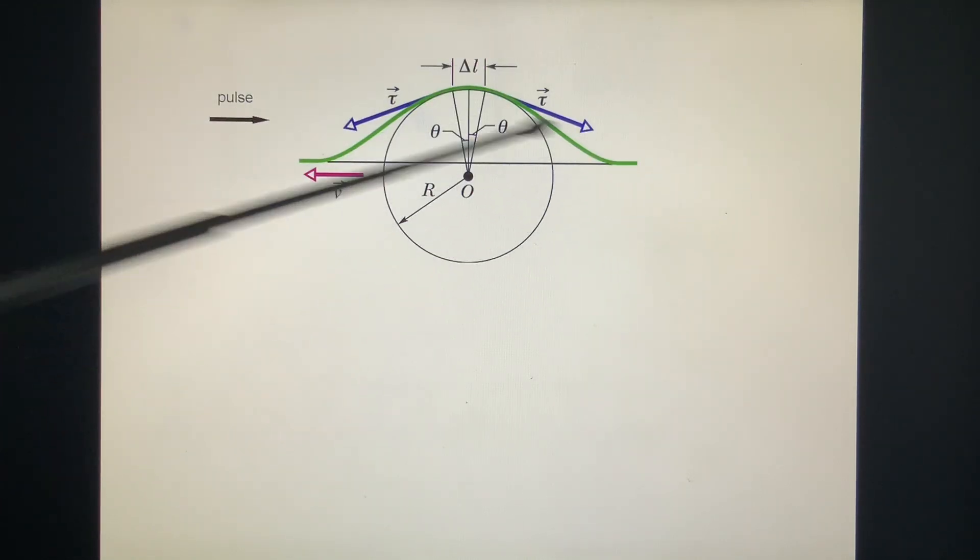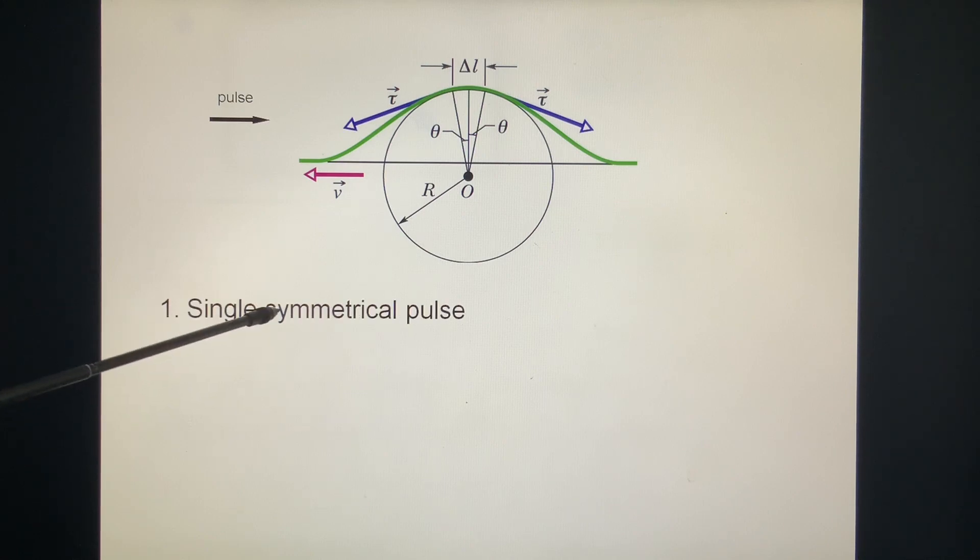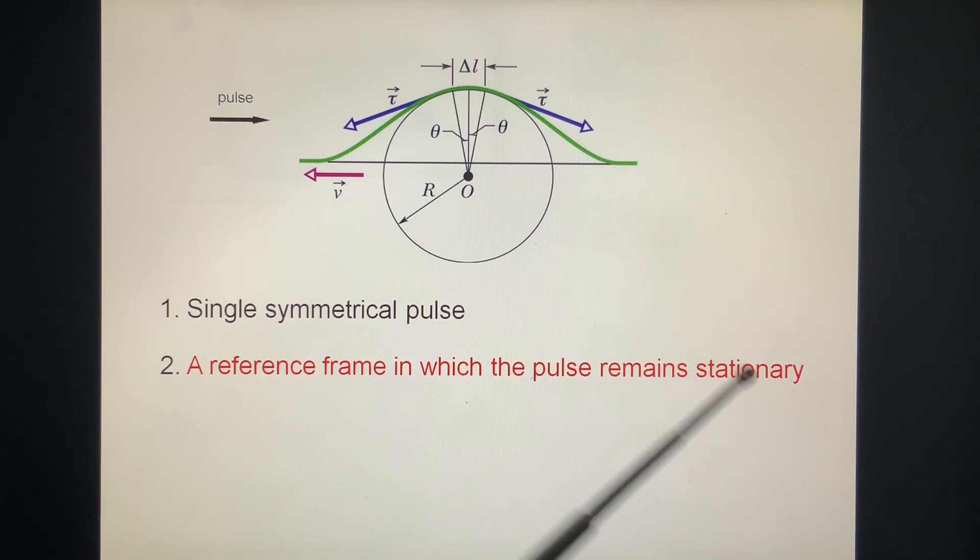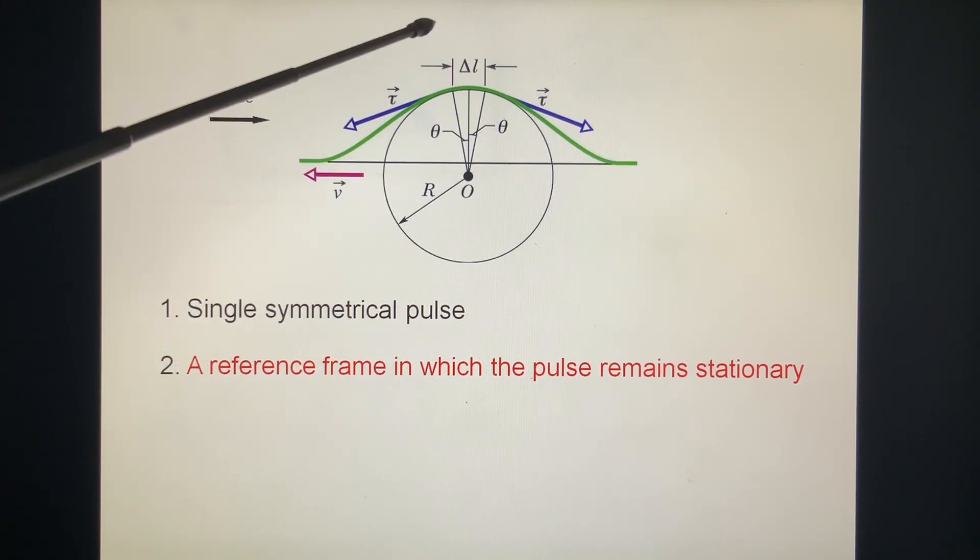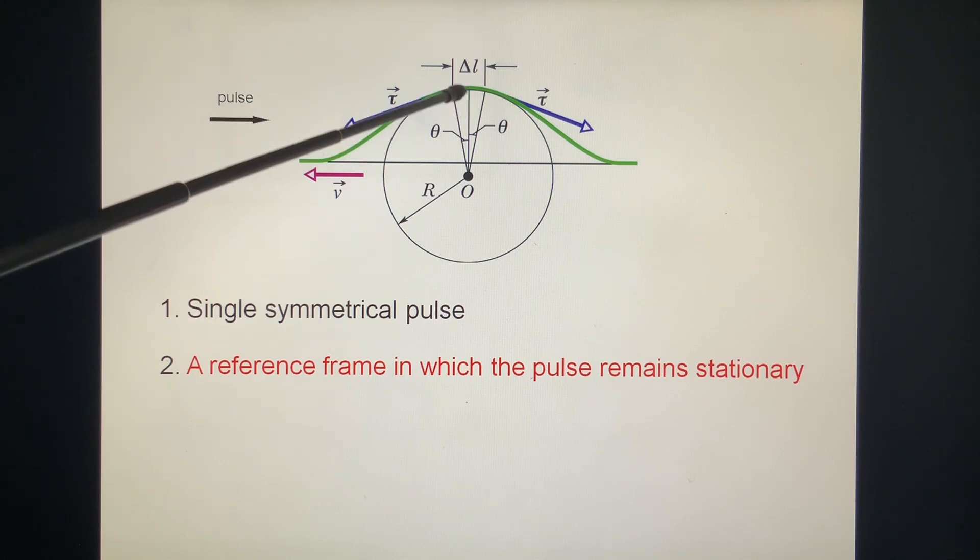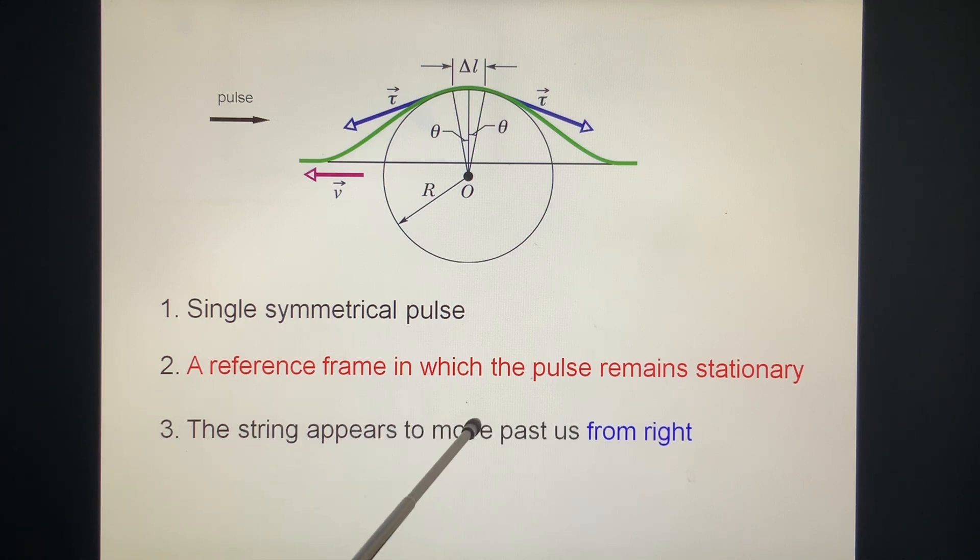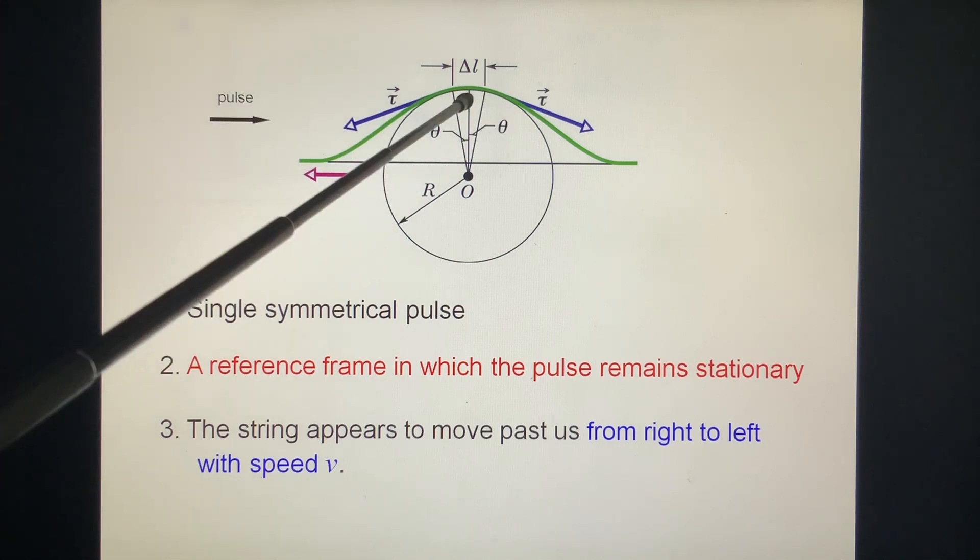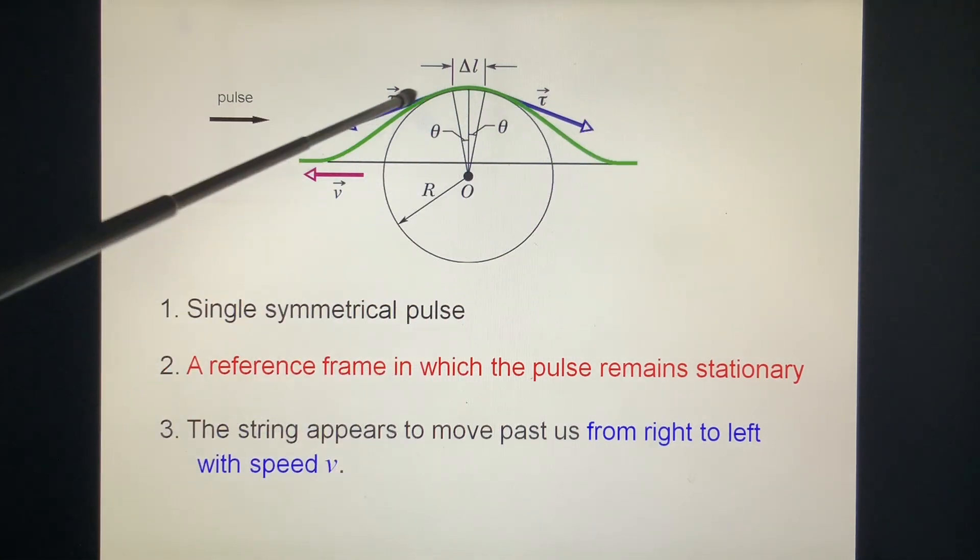This is a stretched string. Single symmetrical pulse. We will study this one. A reference frame in which the pulse remains stationary. The pulse is moving from left to right, and the reference remains stationary. That means we take the reference and go with it. The speed of this string, the wave is constant, so that frame is an inertial frame. In that case, the string appears to move past from right to left with speed V.